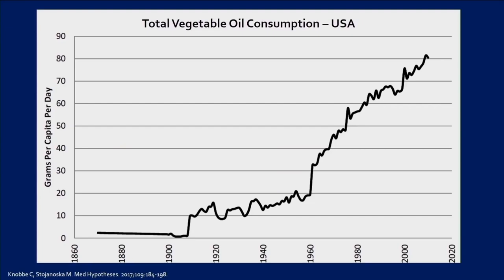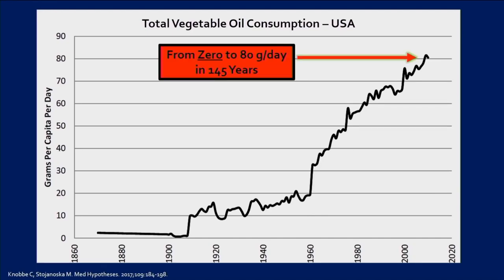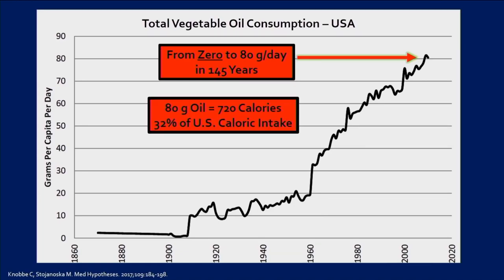Here's our data on total vegetable oil consumption. From the 1860s up until about 1909, we're around 2 grams a day. It steadily rises, then with the introduction of all the other vegetable oils, up to 80 grams a day by 2010. So we went from zero to 80 grams of vegetable oil a day in 145 years — this is an infinite increase. We didn't have them before. 80 grams a day of oil is 720 calories — that's 32% of U.S. caloric intake. That makes this the single greatest change to nutrition in all of history.